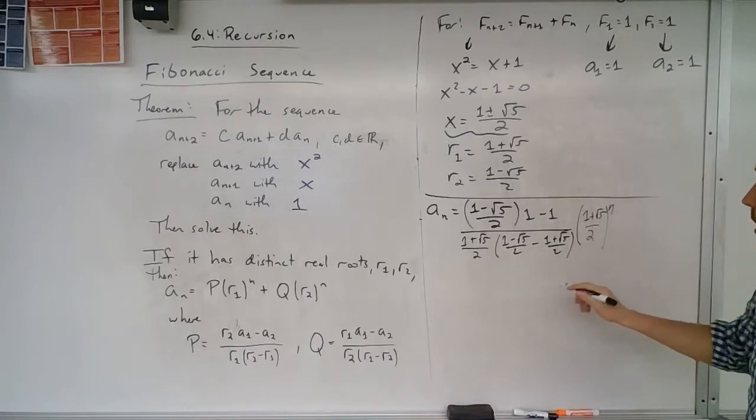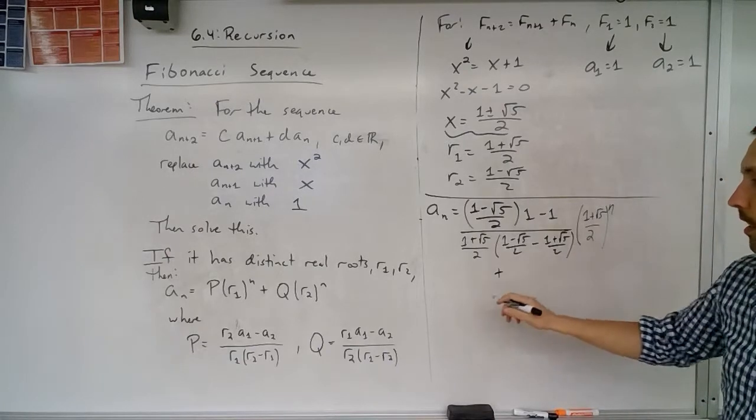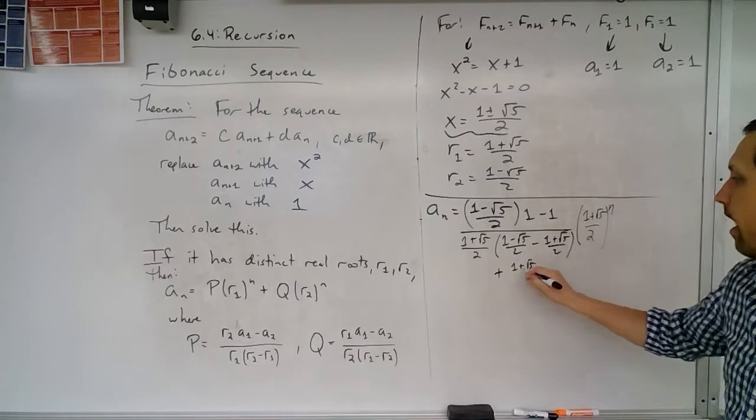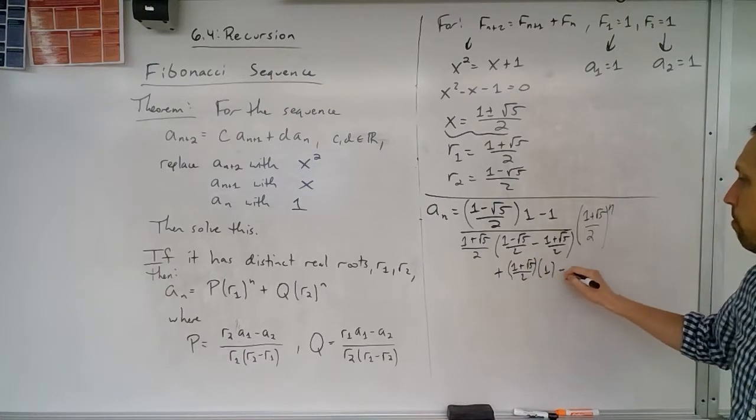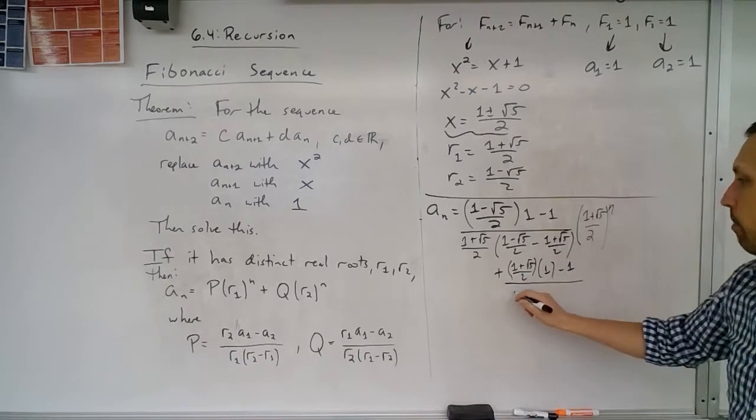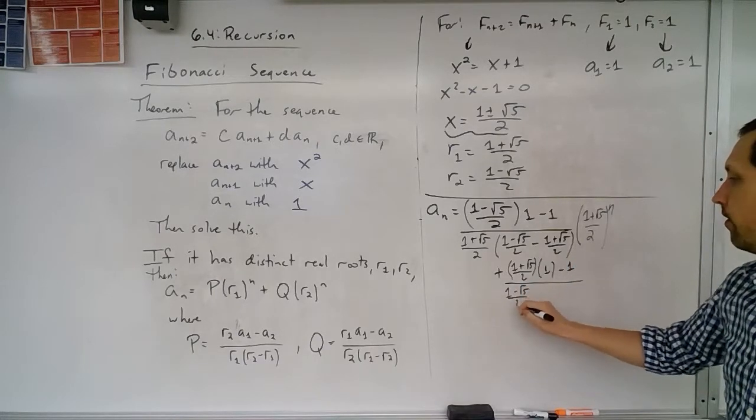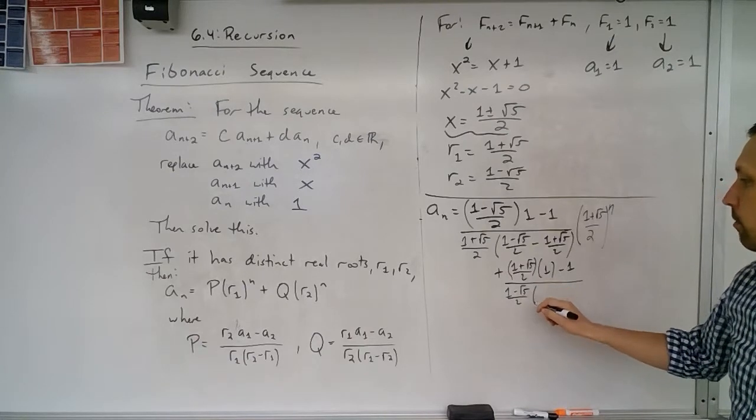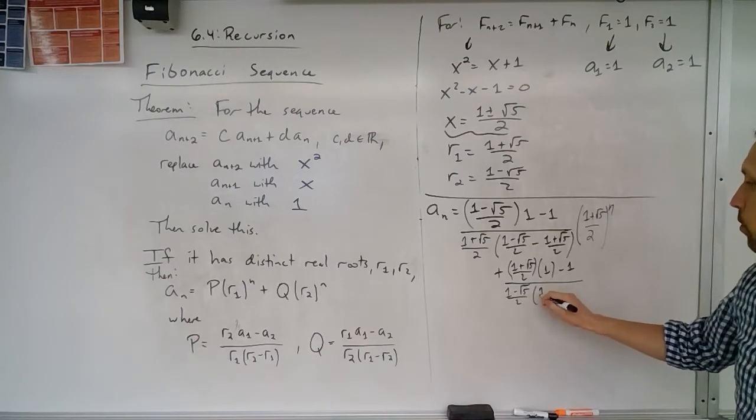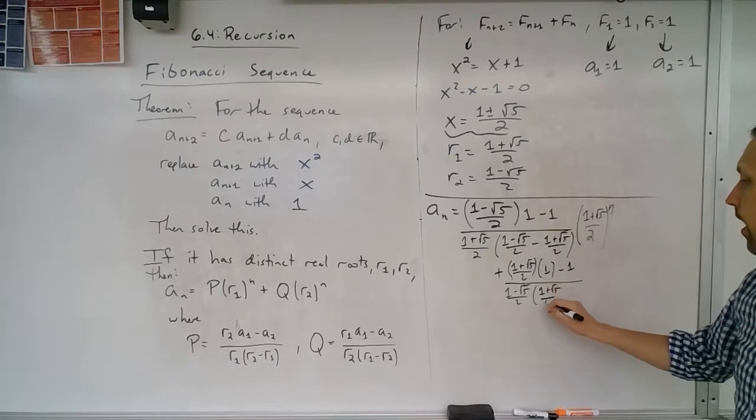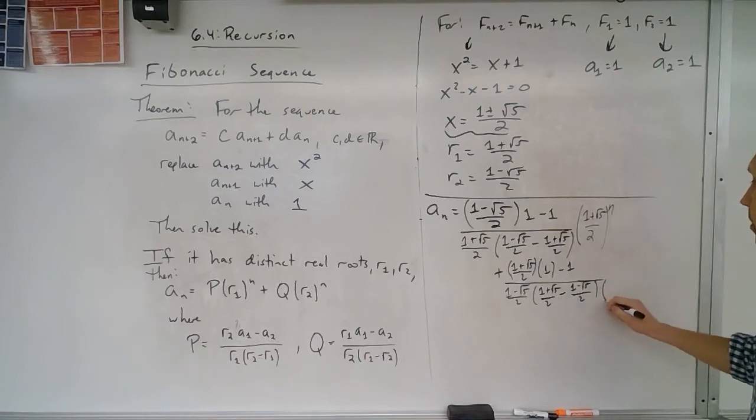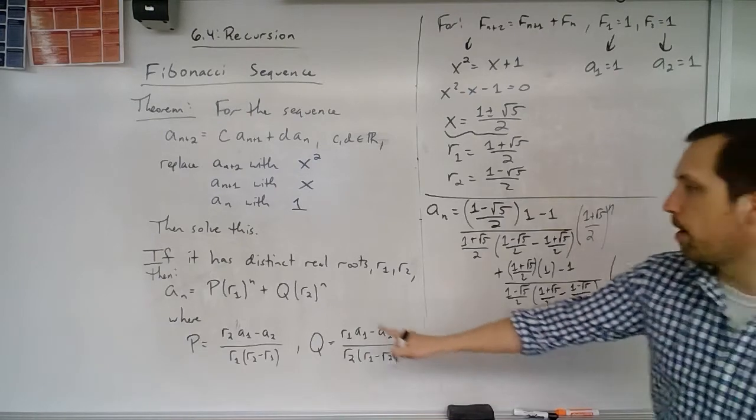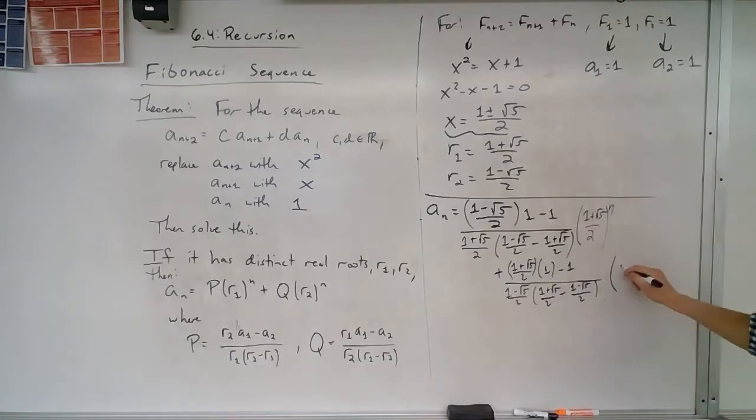Then I have my Q term. We see that's going to be r1, which is (1 plus the square root of 5) / 2, times 1 minus 1 divided by ((1 minus the square root of 5) / 2) times our r1, which we said was (1 plus the square root of 5) / 2 minus (1 minus the square root of 5) / 2, and this whole thing now is multiplied by r2 to the n, so (1 minus the square root of 5) / 2 raised to the n.